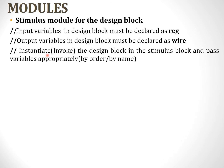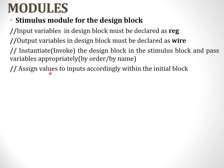Next, we need to instantiate or call the design block to apply the stimulus. We can call the block either by order or by name — this concept will be covered in the later part of the module. After instantiating the design block, we assign values to the inputs in terms of binary numbers using the initial block. Finally, we end the code. This is the objective of a stimulus module.